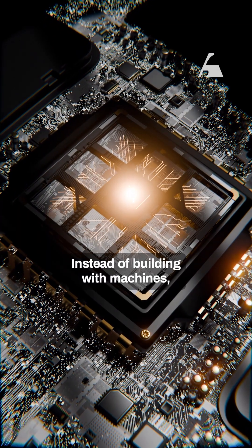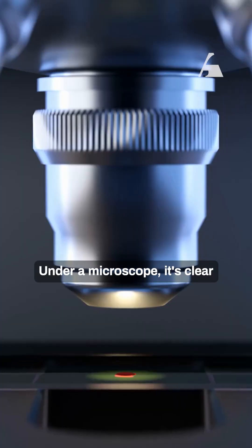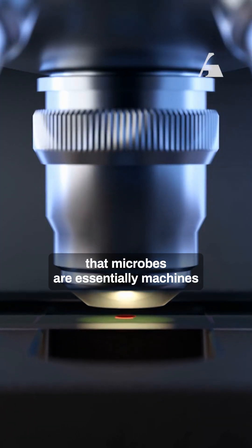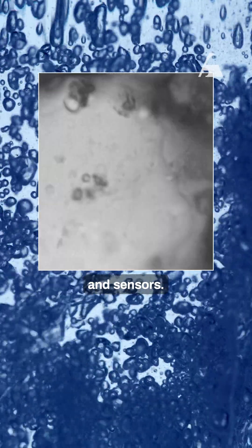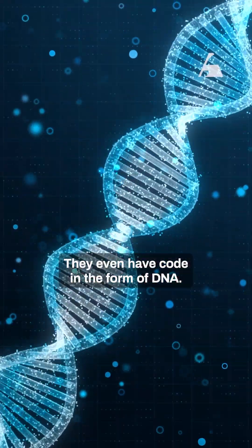Instead of building with machines, it's building with biology. Under a microscope, it's clear that microbes are essentially machines, with organelles functioning as motors, pumps, and sensors. They even have code in the form of DNA.